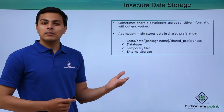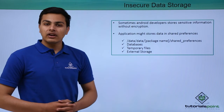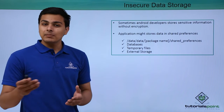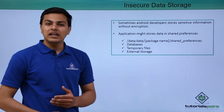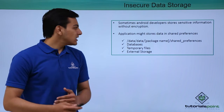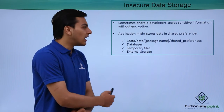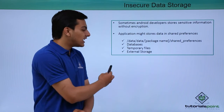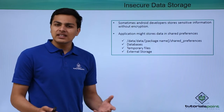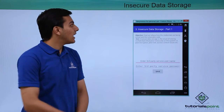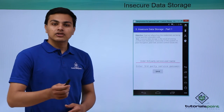If an application stores user data like username, password, and auth tokens in plain text, another application can also access that information in plain text. An application might store data in shared preference folders, databases, temporary files, external storage, and so on.